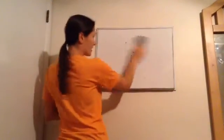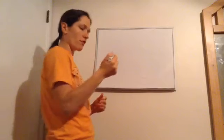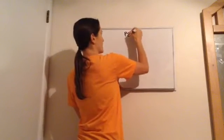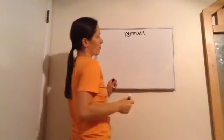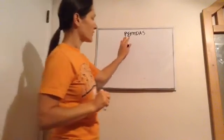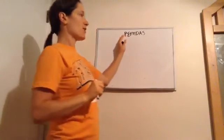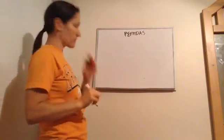Algebra 1, Lesson 12 — this is on symbols of inclusion and order of operations. Let's talk about symbols of inclusion. So far when you've learned PEMDAS, you've learned that P stands for parentheses. That's just a thing to remember, but it can also include any kind of symbol of inclusion.